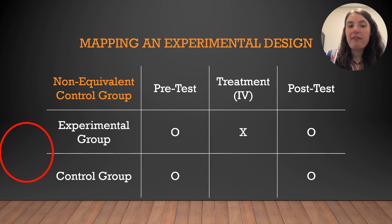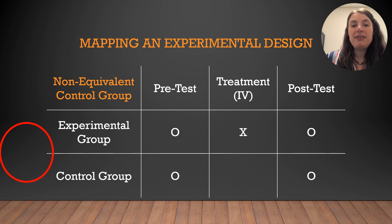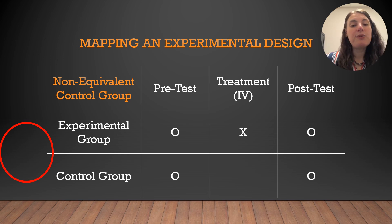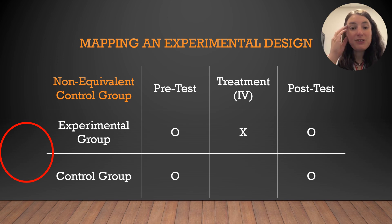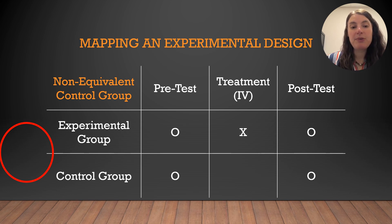Non-equivalent control group designs are useful when you have concerns about diffusion or demoralization and you want to geographically separate the two groups. For instance, let's say you wanted to study the impact of a drug use awareness program on high schoolers. If you randomly assign students within the same school to experimental and control groups, diffusion and demoralization become significant concerns. To reduce this, you may use high school A as your experimental group and high school B as your control group. This means you cannot randomly assign students because you can't change someone's school temporarily. If the two schools differ in their student body, it will influence your results, but you can match A and B to be as similar as possible in demographics, student characteristics, and size to minimize those differences.